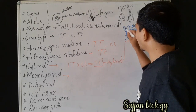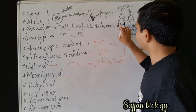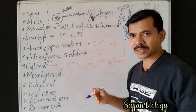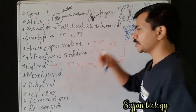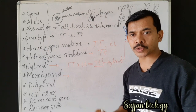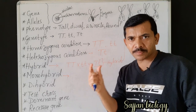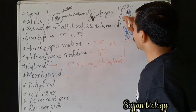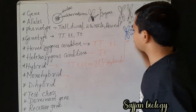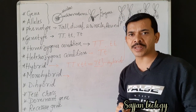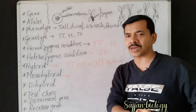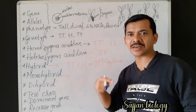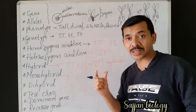The chromosome brought by the father is called the paternal chromosome, and the chromosome brought by the mother is called the maternal chromosome. When paternal and maternal chromosomes are the same in size and shape, they are called homologous chromosomes.